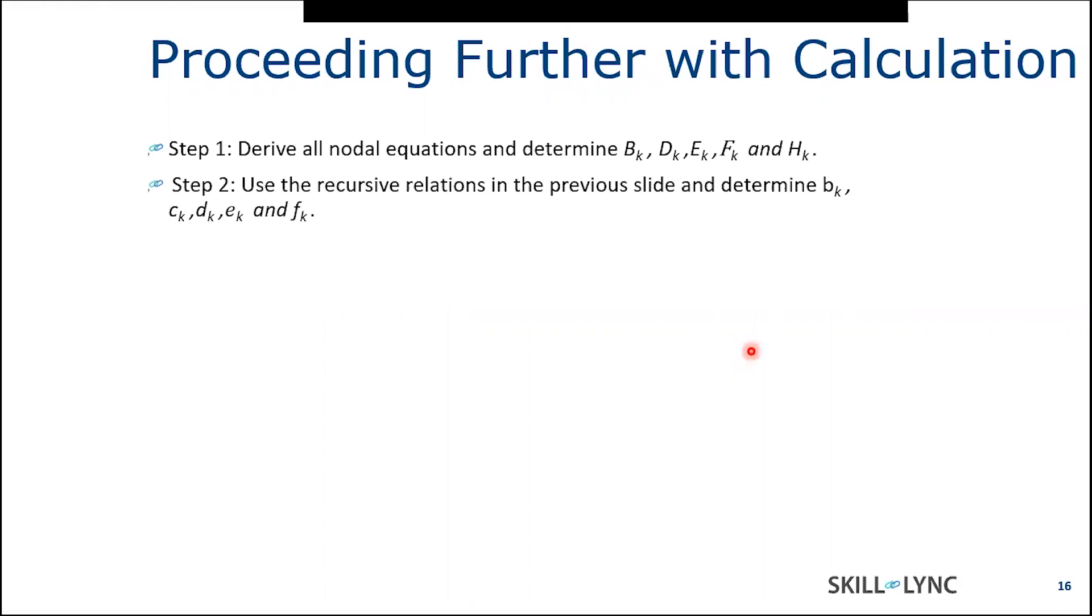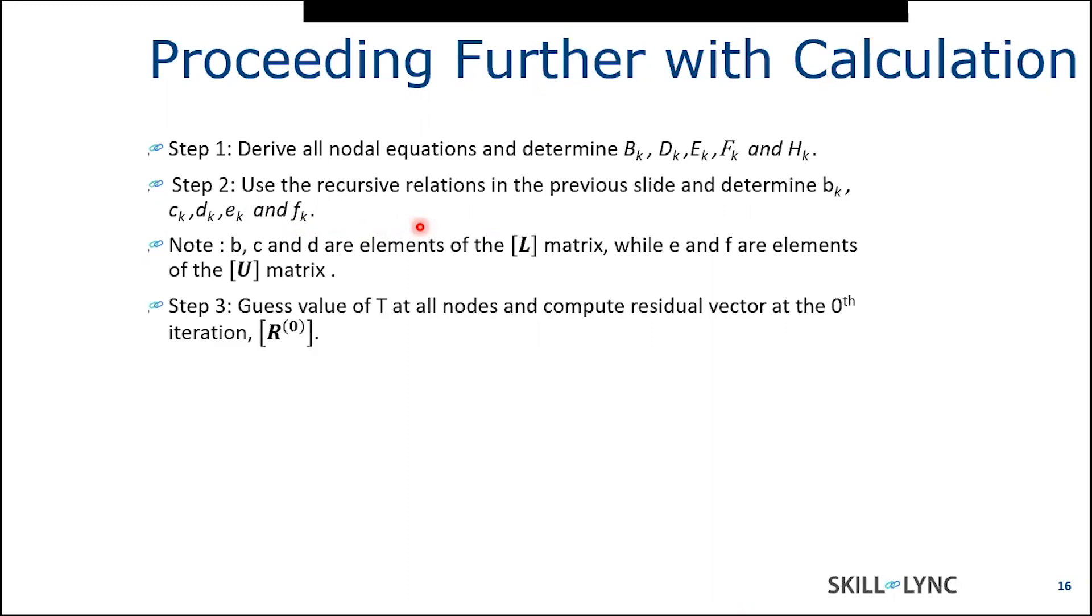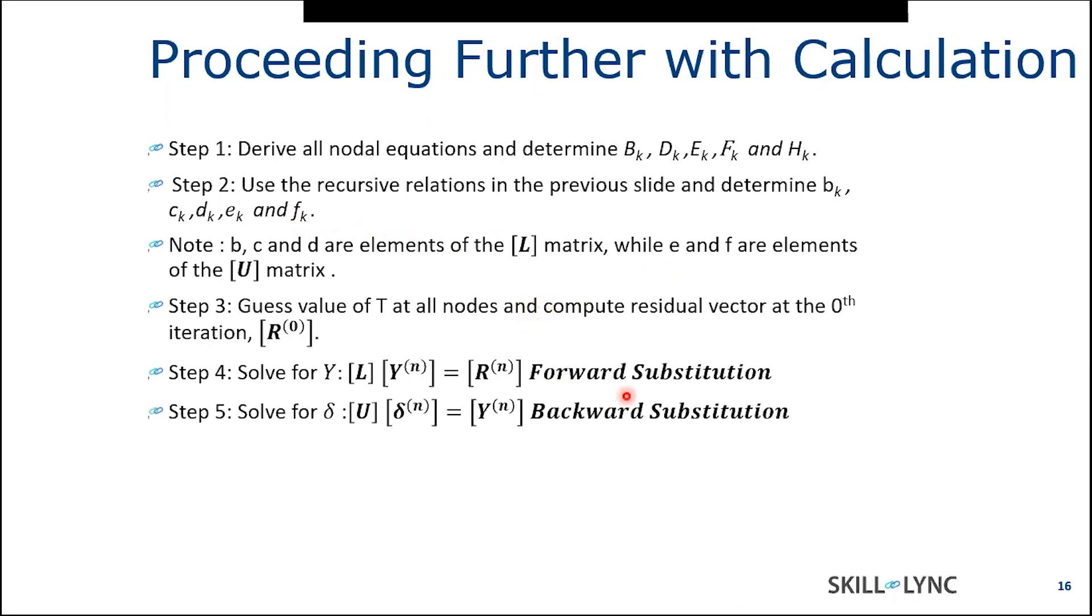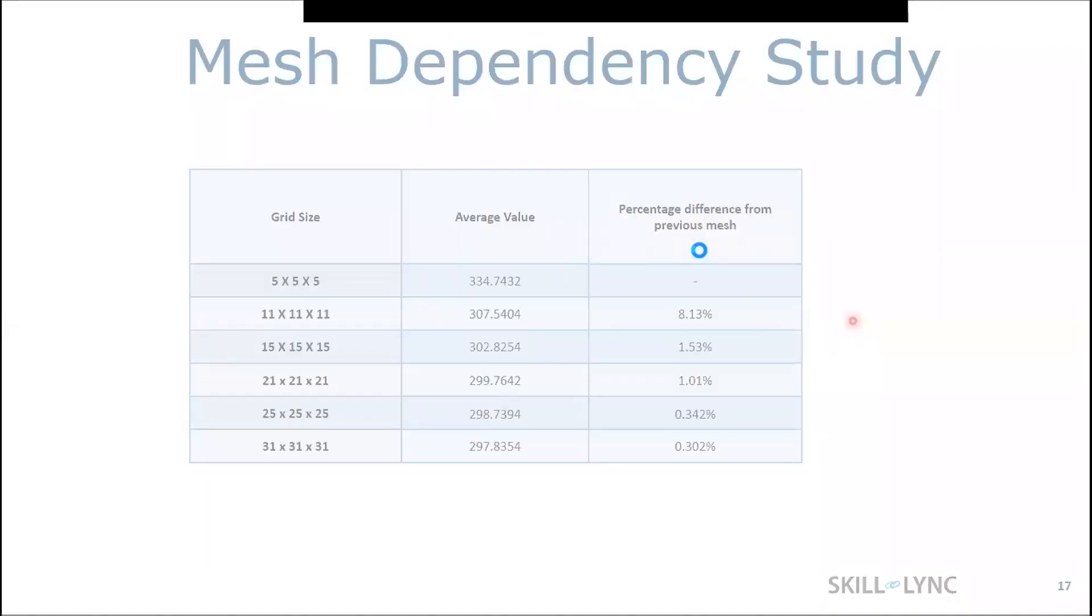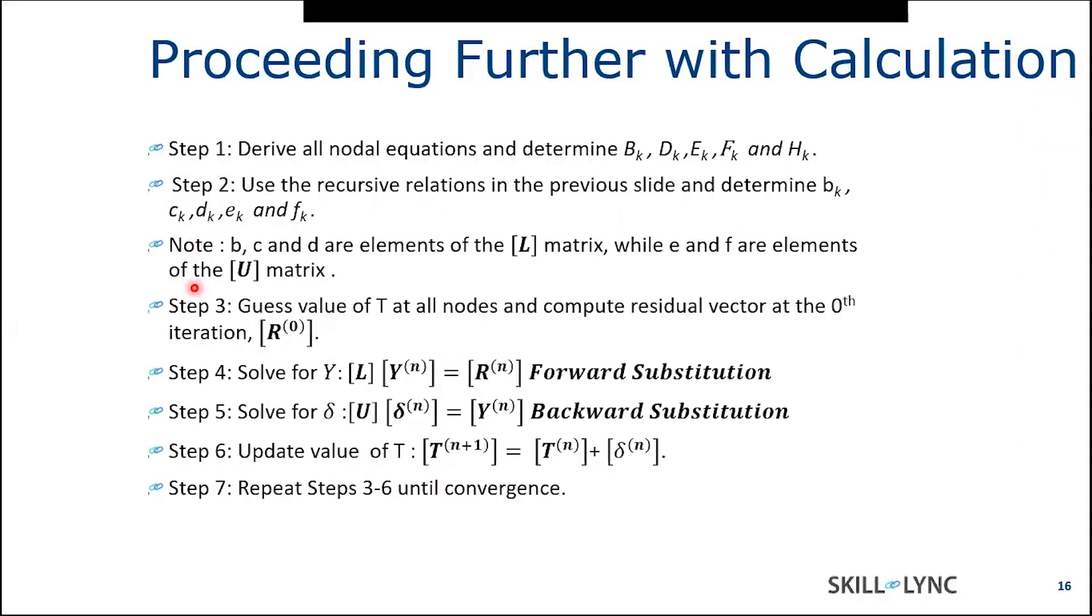After proceeding with further calculations, step one is concerned, we derive all the equations and determine b_k, e_k, f_k and c_k. These are nothing but the coefficients. And as we have the 7-banded matrix as a product of L·U, we need to find these coefficients. Once you get these elements, you will form the L matrix and once you get e and f, it forms U matrix. And you will get the values of R and go with forward and backward substitution. And you update the value of T_n+1 in every iteration. And then once you update the value of the iteration, the last step is repeat steps three to six until converged.